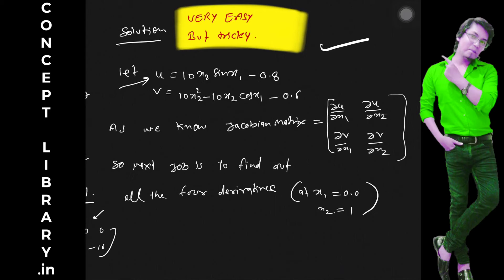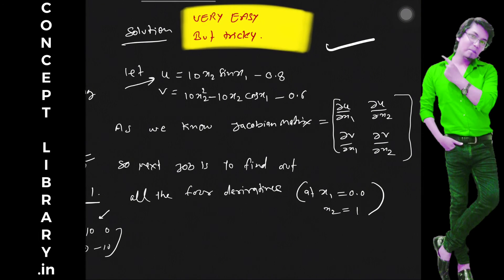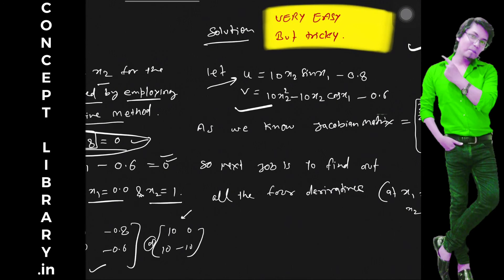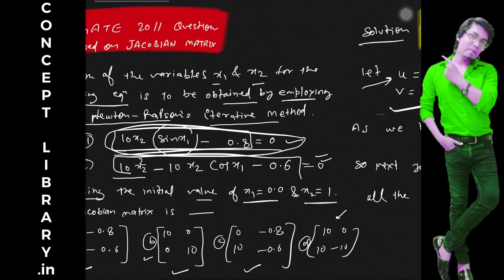Let's see, this is very easy but important. We have our first equation u equal to 10x2 sin x1 minus 0.8. This equation we considered as u, this much part we have considered as u.